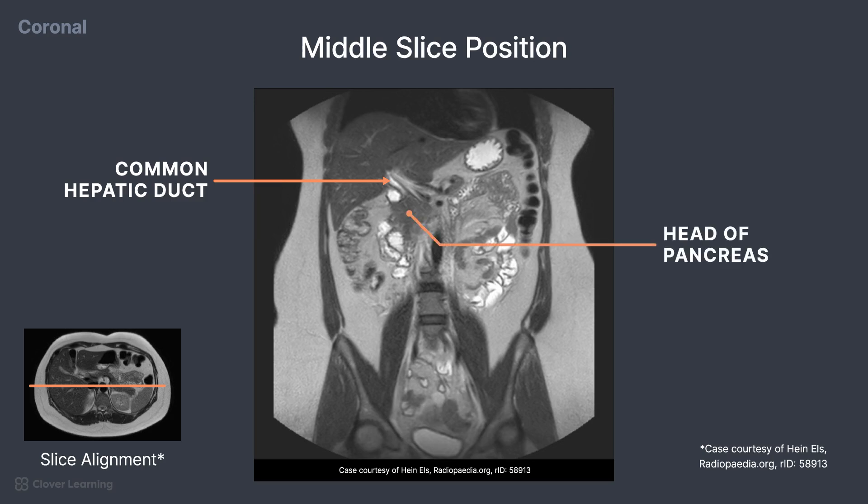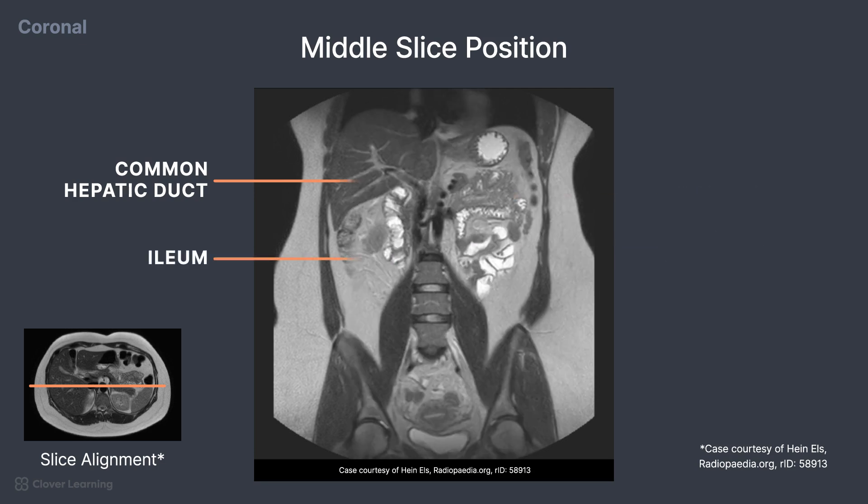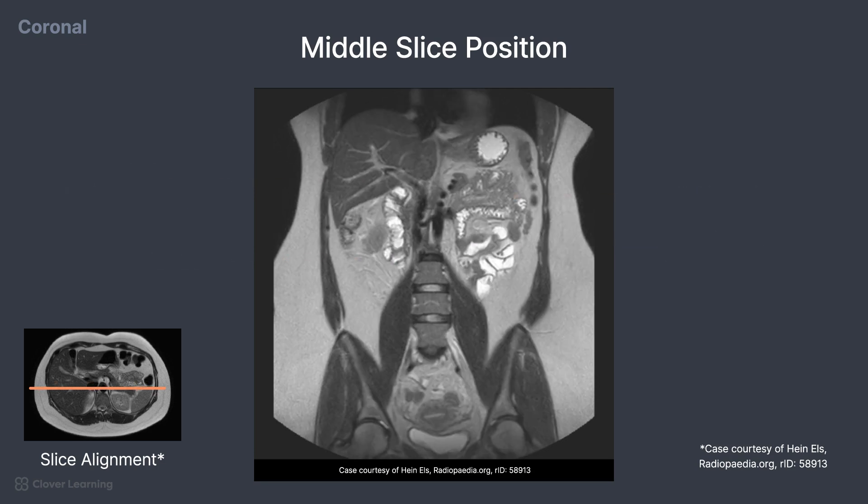Small bowel structures visible here include the jejunum and the ileum. On this slice, the stomach continues to be visible,